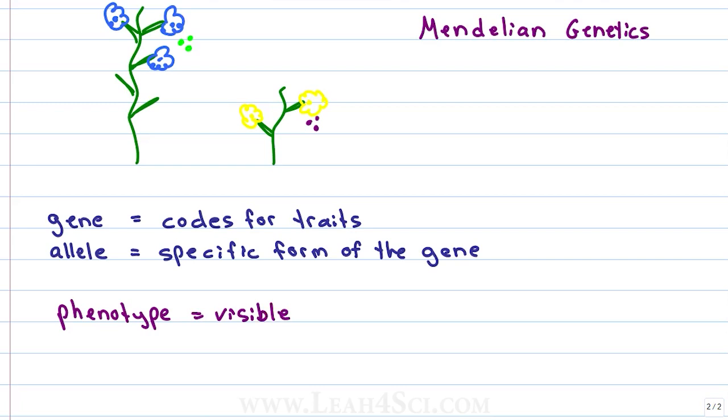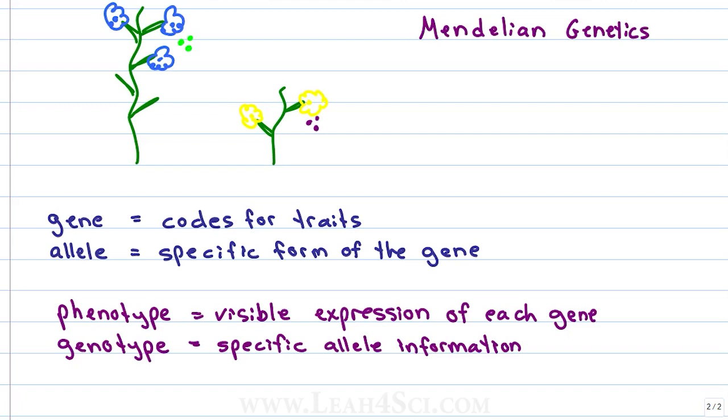The phenotype is the visible expression of the gene. The first one has a blue flower phenotype, the second one has a yellow flower. The first one is tall, the second is short. Those are phenotypes, but we don't necessarily know what the specific alleles are just by looking at what we see, because the genotype can vary and still give us the same outward expression.